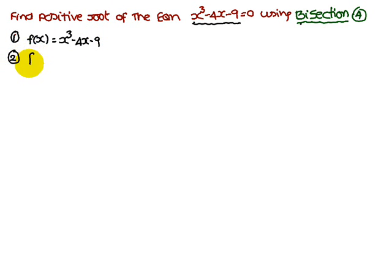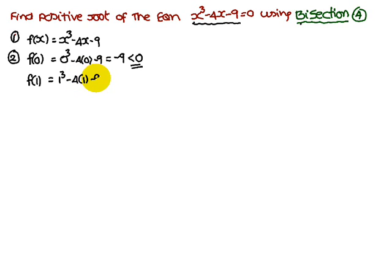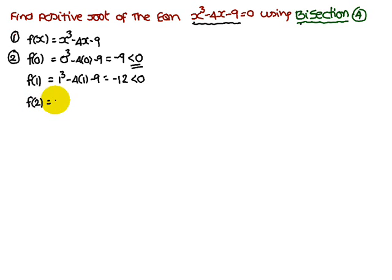Substitute 0 into the function: 0³ - 4(0) - 9 = -9, which is a negative value. Next, substitute 1: 1³ - 4(1) - 9 = 1 - 4 - 9 = -12, which is also a negative value.